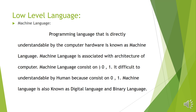The first category of low level language is machine language. A programming language that is directly understandable by the computer and computer hardware is known as machine language. Machine language is associated with the architecture of a computer system and consists of 0s and 1s. It is difficult to understand for humans, and machine language is also known as digital language as well as binary language.